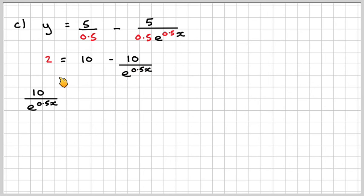We're going to have 10 over e to the 0.5x equals 8. And then we have e to the 0.5x equals 10 over 8.